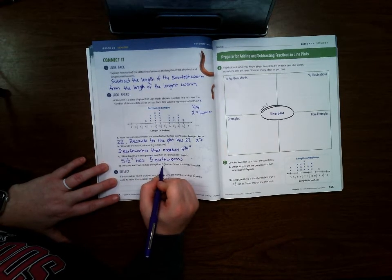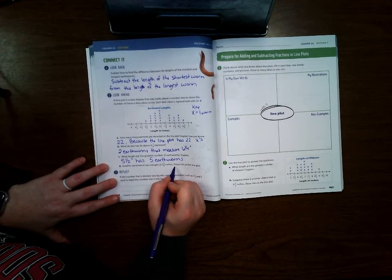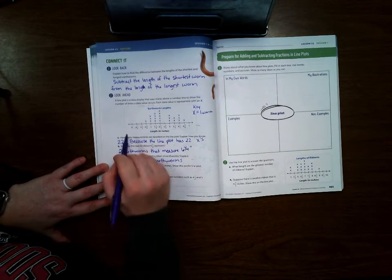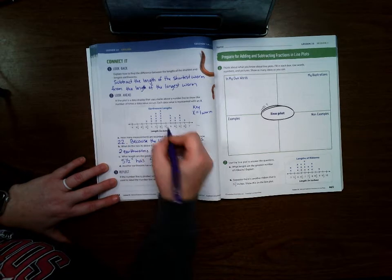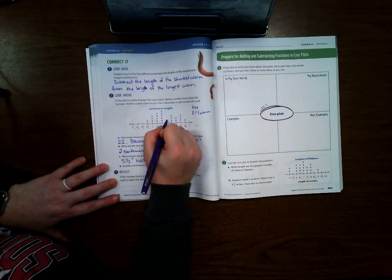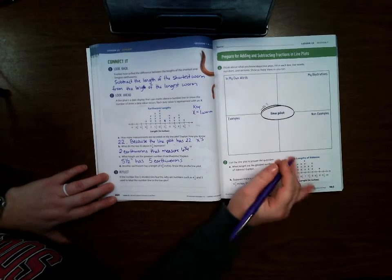Another earthworm has a length of five and three fourth inches. Show this on the line plot. So we go through here and we look for five and three fourths, and then we just mark one x right above it to show that that's one earthworm.